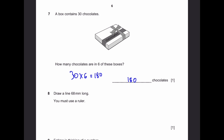Question 8. Draw a line 68 millimeters long — you must use a ruler. So 68 millimeters is 6.8 centimeters. If you take a ruler, start from a point, and draw a line along to the 6.8 centimeters mark to the other point. We'll call this line AB, and it has to be 6.8 centimeters long.